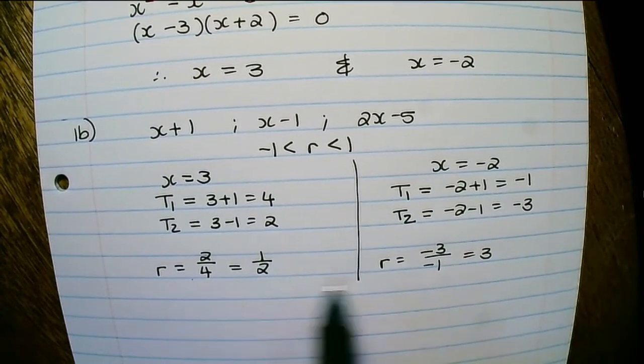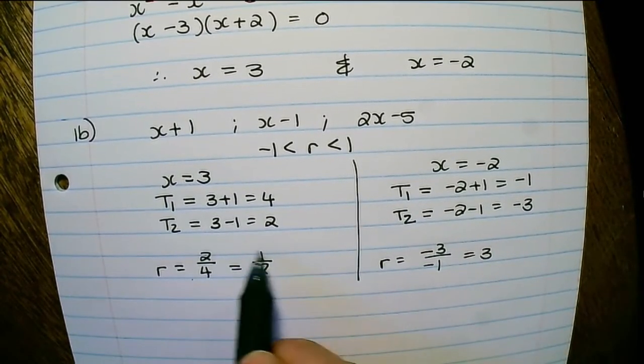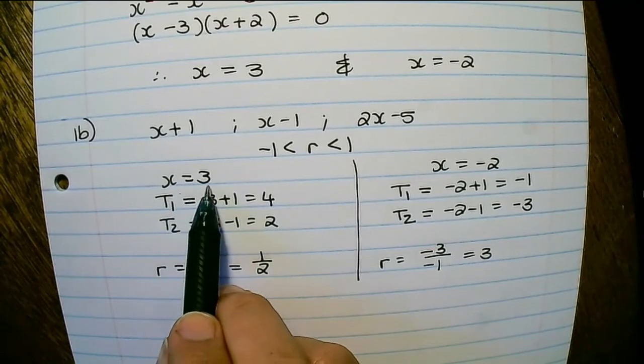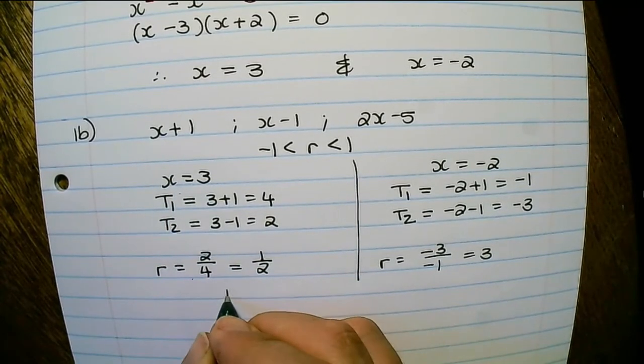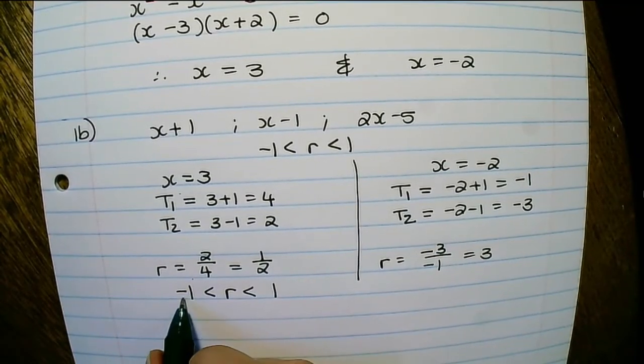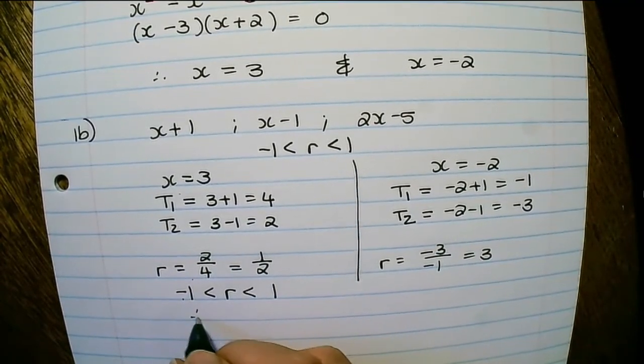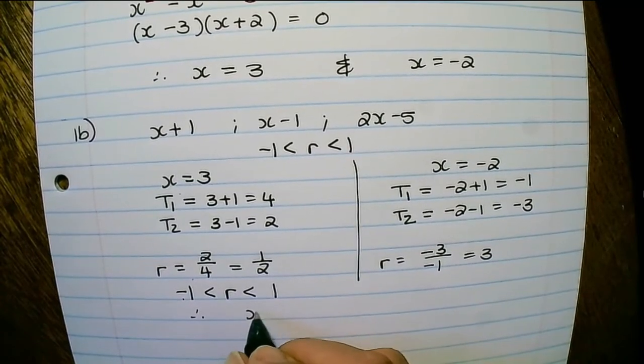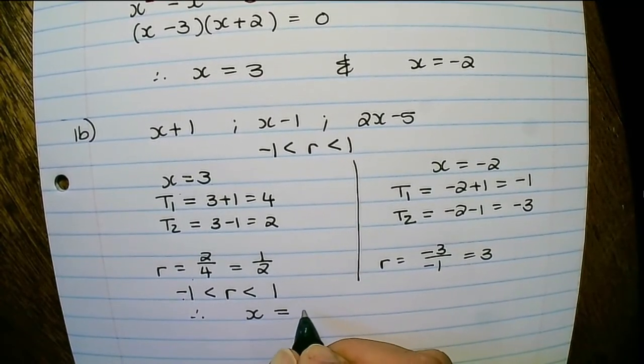And we can see from these two that the ratio on the left where x was equals to 3 satisfies the restriction of convergence, meaning the ratio is between negative 1 and 1. Therefore the series will converge for x equal to 3.